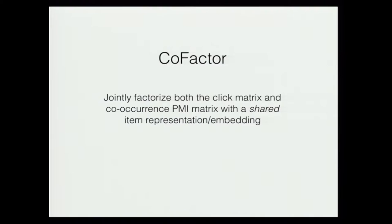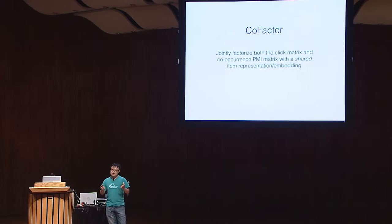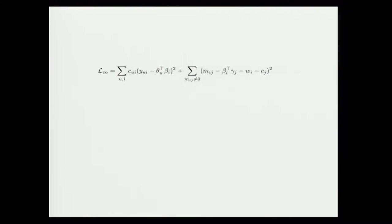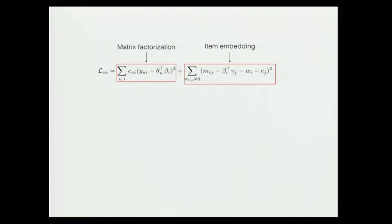Now that we have the recipe for both factorization and item co-occurrence, we propose a model we call co-factor. In one sentence: we are jointly factorizing both the click matrix and the item co-occurrence PMI matrix with a shared latent item representation (embedding). The objective for the co-factor model consists of two parts: the first part is our same old friend, matrix factorization; the second part is the item embedding where we factorize the PMI matrix M. We do this joint factorization by forcing both parts to use a shared item representation beta.